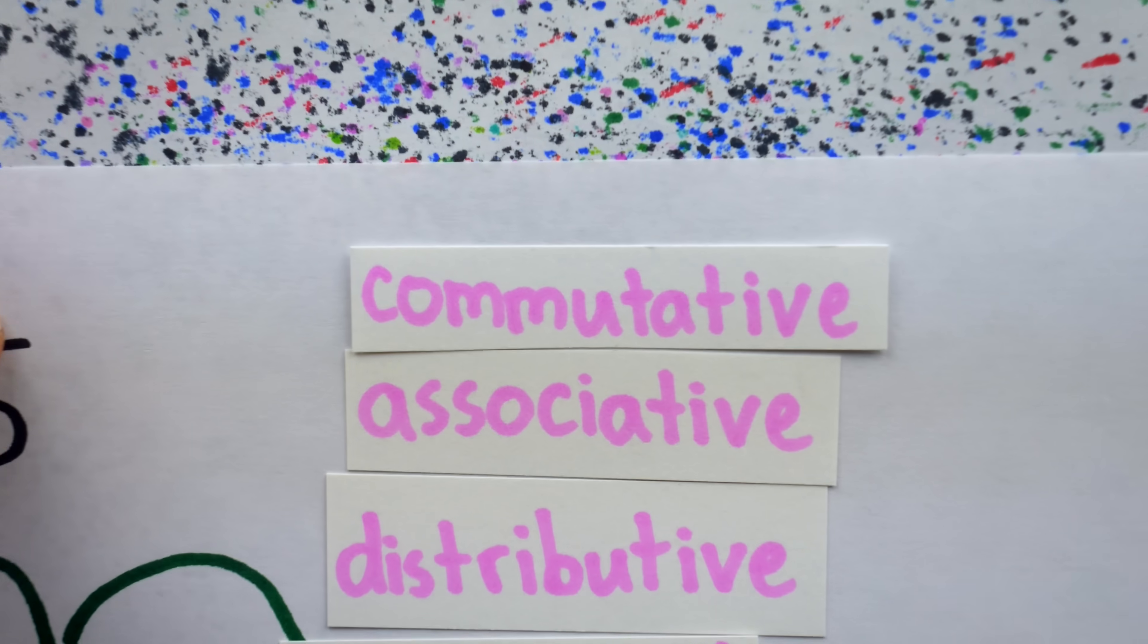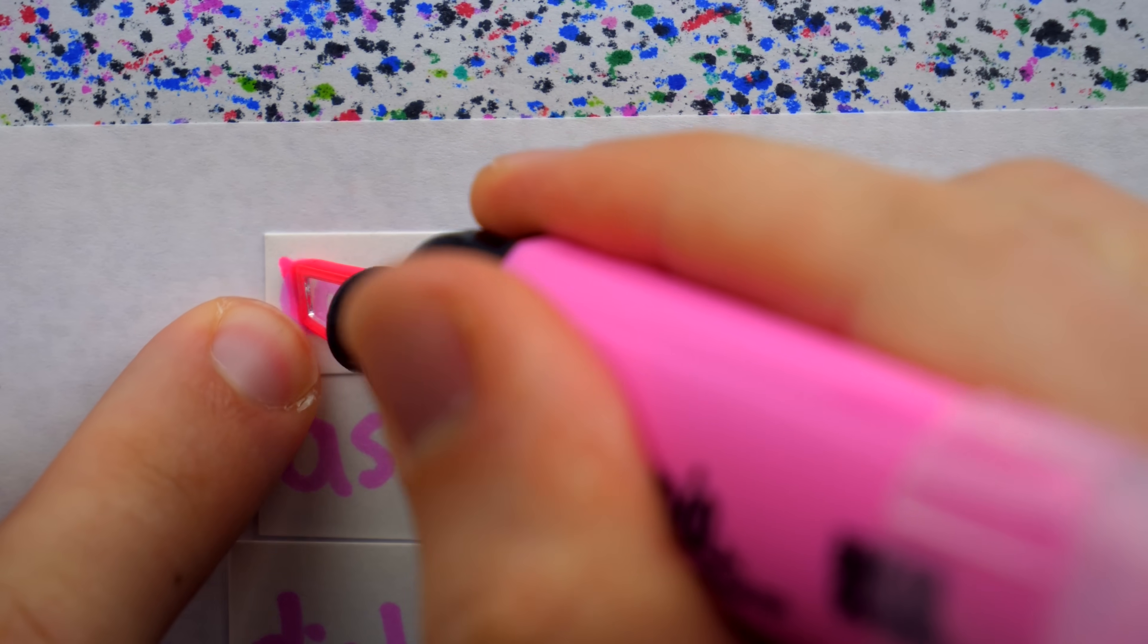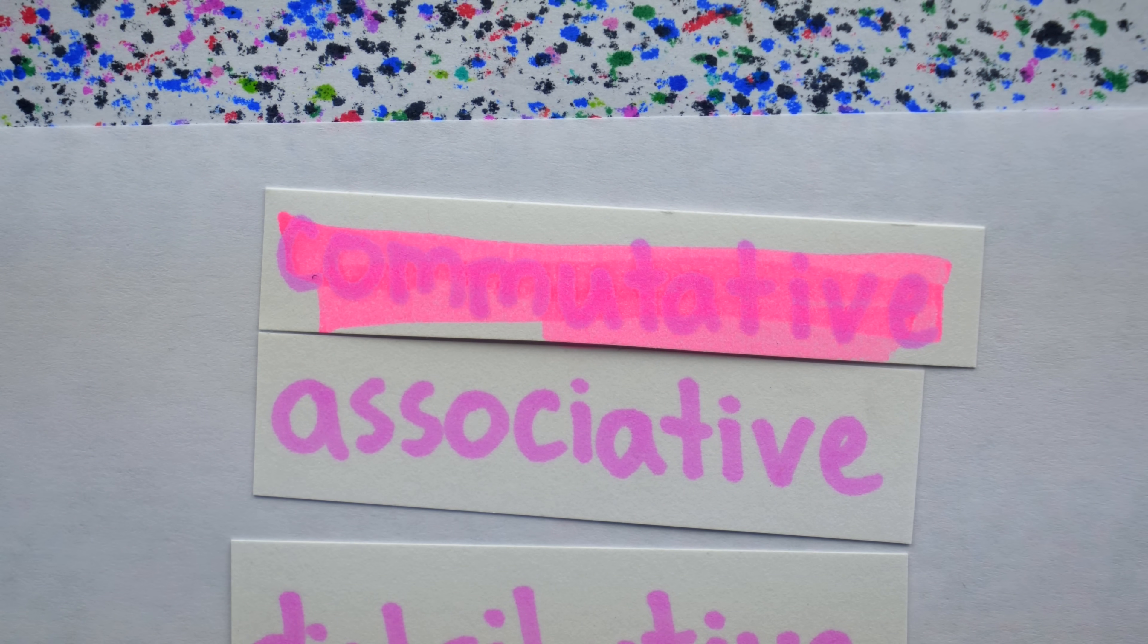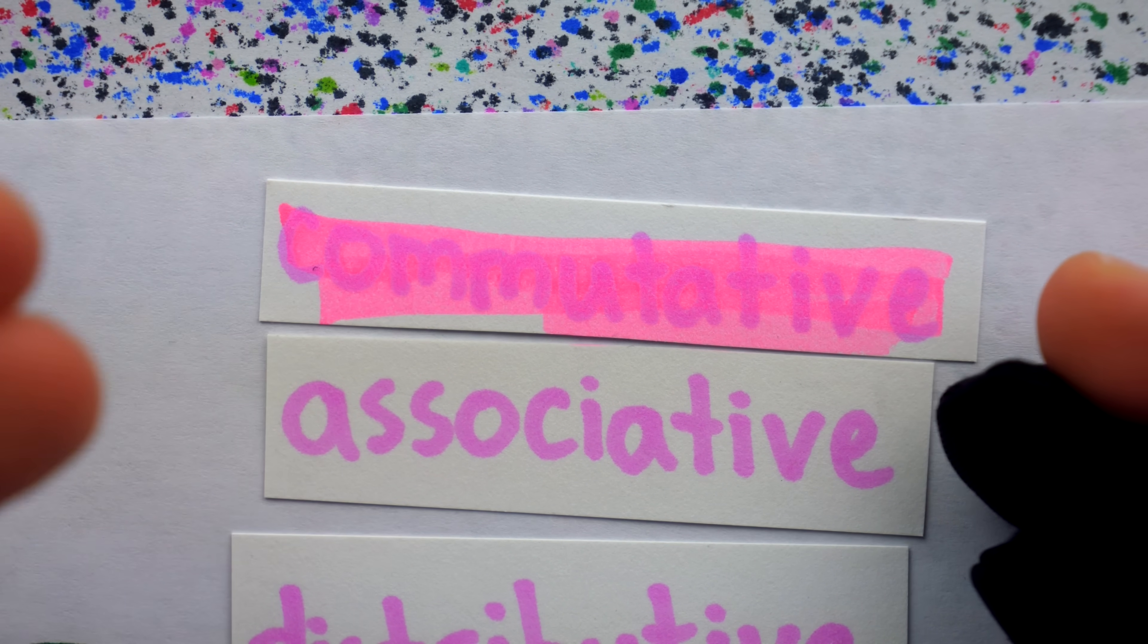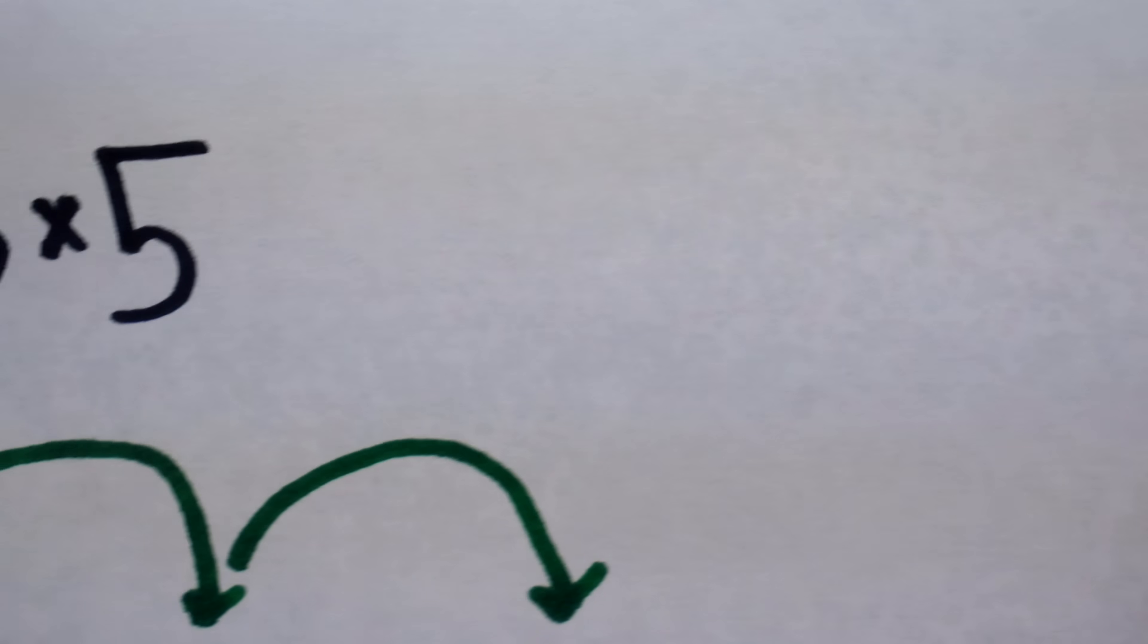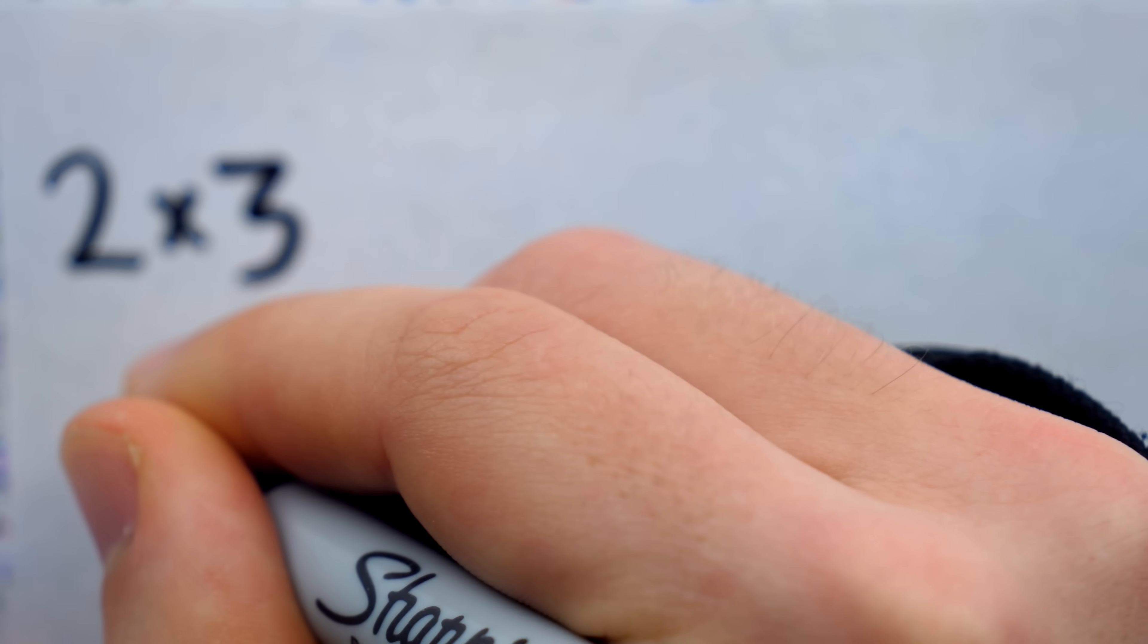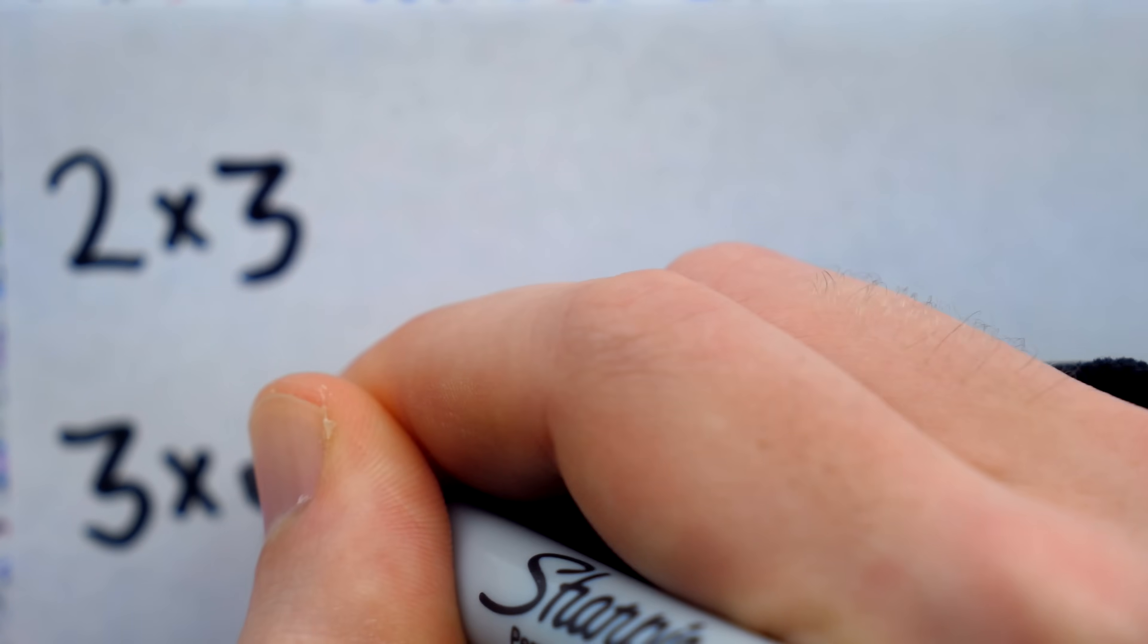And I think we can agree that the method of doing an operation should be the focus before communicating the nice properties that the operation happens to have. Particularly because this convenient property of commutativity that the order doesn't matter is a very important one. And to teach this important property, it's important that you don't trivialize it. Instead of saying, oh, two times three, three times two, doesn't matter, they're the same thing. You should say, look,